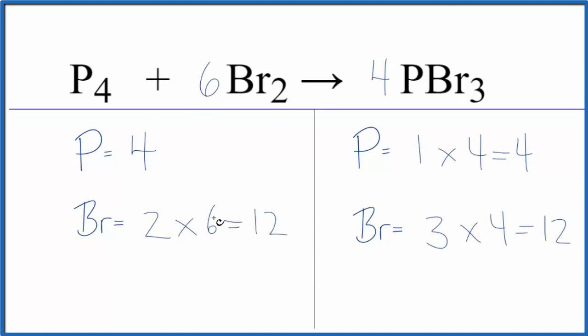This equation is balanced. So you can see I balanced the phosphorous first, not only to get the four on both sides, but also because I knew that would give me an even number. Then I could balance the bromine atoms.